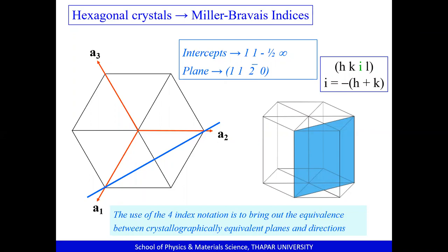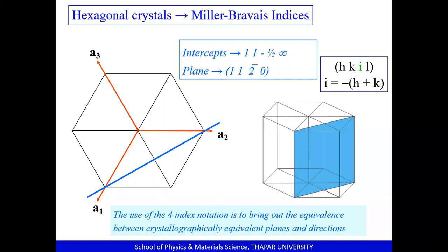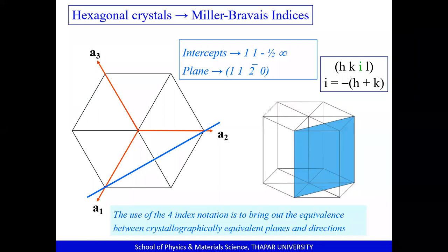In yesterday's class we understood the Miller notations for crystallographic planes in the cubic unit cell and began our discussion on Miller notations for hexagonal unit cells. The Miller notation for hexagonal unit cells is a four-index notation represented by hkil, also called the Miller-Bravais notation. The three-index system hkl is called the Miller notation, while the four-index hkil is called the Miller-Bravais notation.